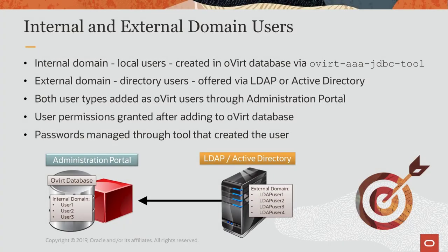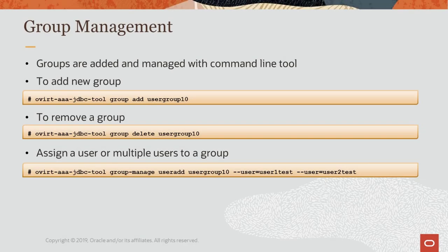Internal domain, also called local users and created through command line, are local to the ovirt database for the system. External directory servers, such as LDAP or Active Directory, can be attached and offer users to the system from external domains. All user types are easily added to the system in the same way through an administration portal dialog. After adding both user types to the ovirt database, they are treated similarly in the administration portal when granting permissions. Passwords for the users are managed by the respective tool or system that was used to initially create them. Groups are first created with the command line tool and then imported into the administration portal, where roles with associated permissions can be assigned to groups and inherited by users.